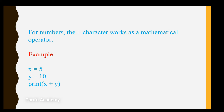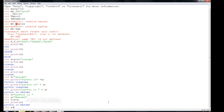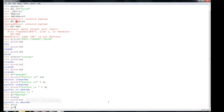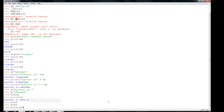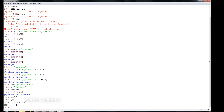For numbers, the plus character works as a mathematical operator. We use it for adding two numbers. Let's see in the shell: x equal to 10, y equal to 20, print x plus y — we get the answer 30. So the plus symbol is used to add two numeric variables as well as two string variables and text with a variable.